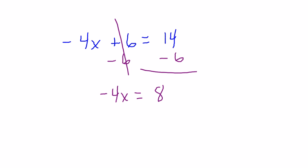And once again, just like before, we're left with a simple one-step equation. The opposite of multiplying by negative 4 would be dividing by negative 4 on both sides. Negative 4 over negative 4 is simply 1. So we are left with 1x equals... 8 divided by negative 4 is negative 2.